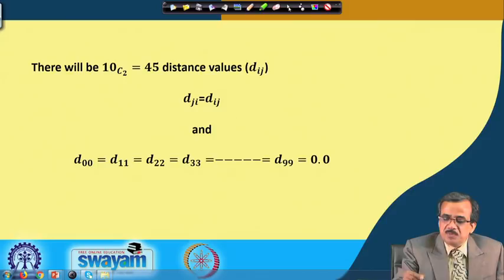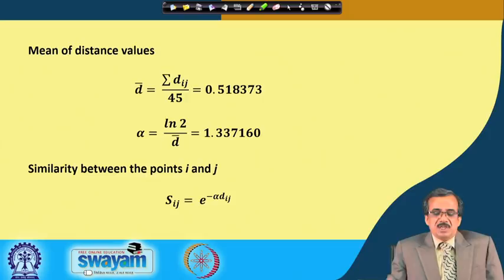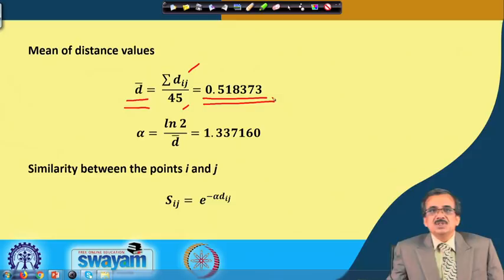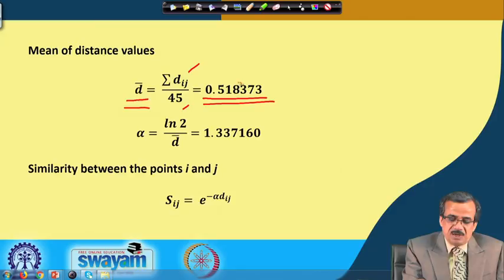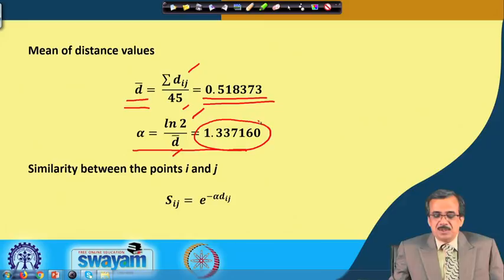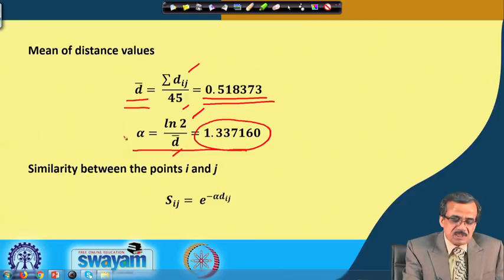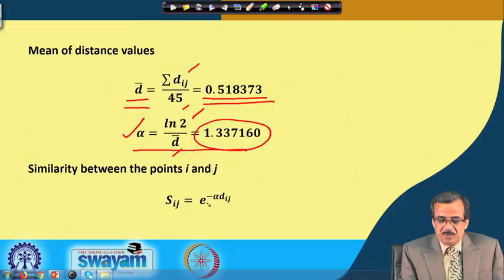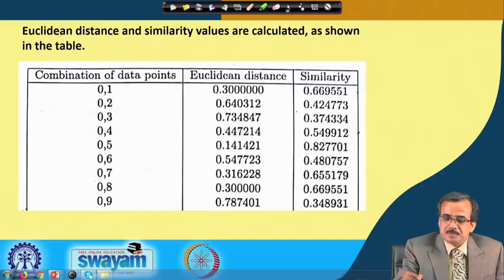Using this information, we can easily find d_bar, the mean distance. That is summation of d_ij divided by 45, which equals 0.518373. Once we have this d_bar, we can find alpha, which is ln(2) divided by d_bar. For this particular data, alpha equals 1.337160. Once we have this value of alpha, we are in a position to calculate the similarity S_ij, which is e raised to the power minus alpha times d_ij.